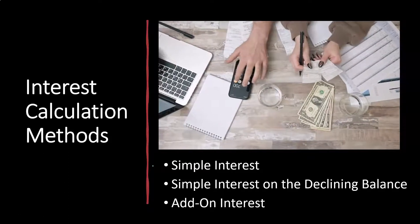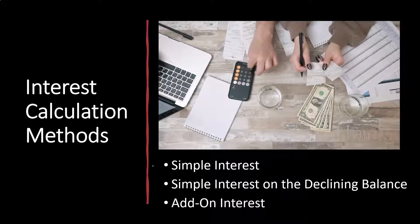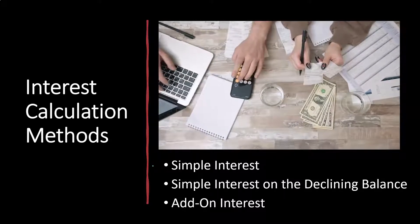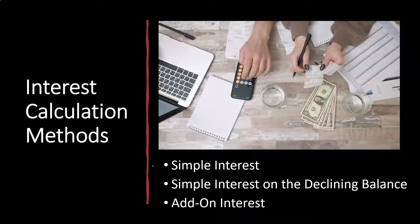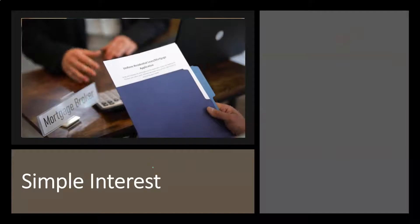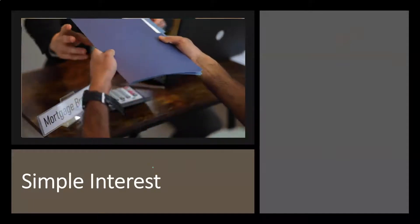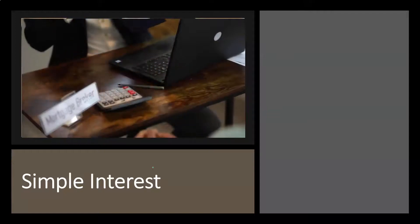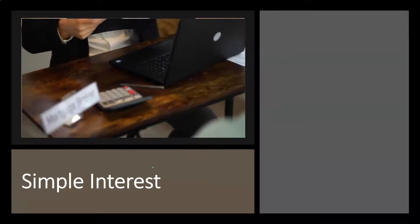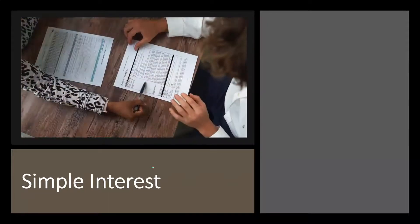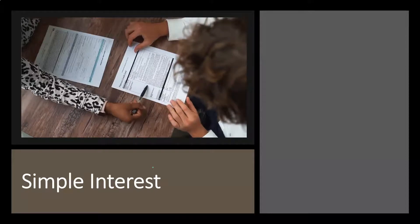Then we have add-on interest. This is something that could be applied — it's not as common, but some loans could be set up this way, and if so, you want to be aware of how that interest is calculated. Typically, when thinking about interest, we're thinking about the rent on the purchasing power of money — when you take out a loan, you are being rented that purchasing power and charged for its use over time.